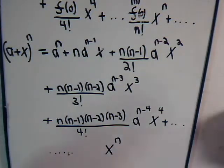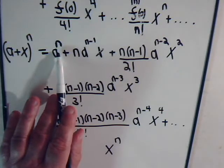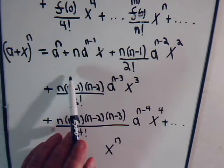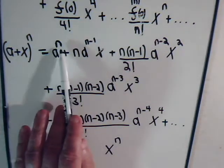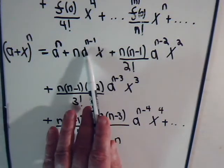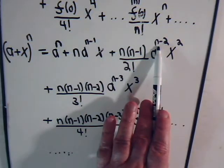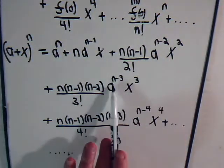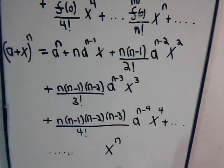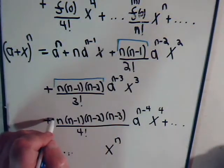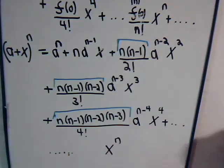Notice we start with a to the n as our first term and our last term is x to the n — no surprise. Now look at these intermediate terms: in the first term we have a to the nth power, in the next term we have a to the n minus 1 times x to the first power, then this exponent decreases by 1 while this exponent increases by 1, and it keeps following that pattern — just as we saw when we first introduced the binomial expansion series. But what about these coefficients?